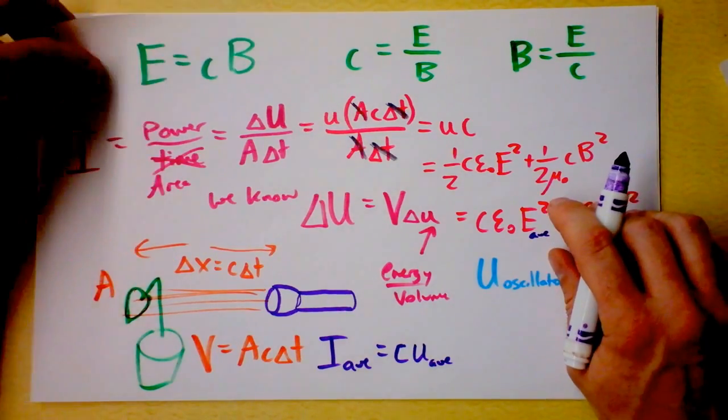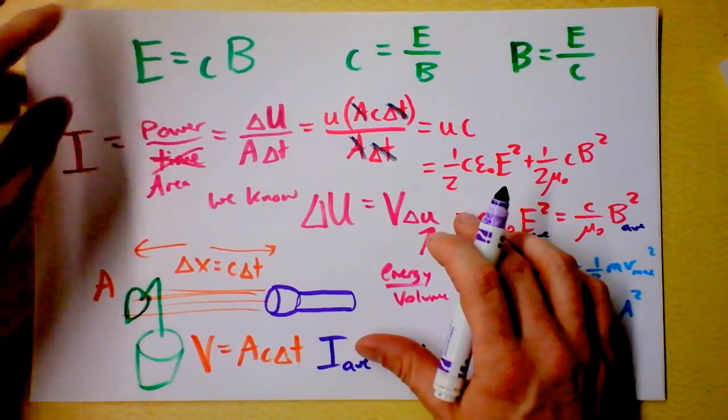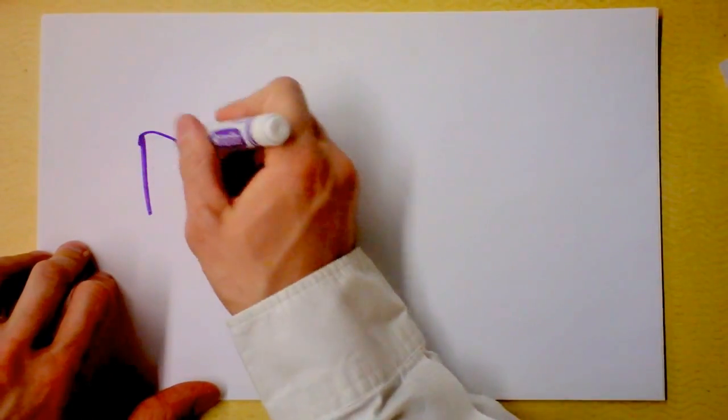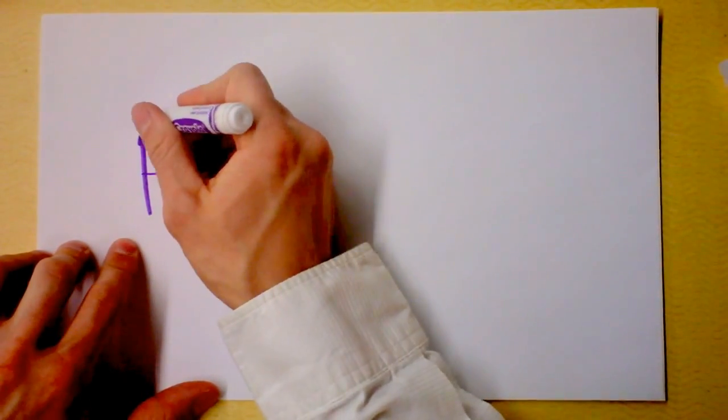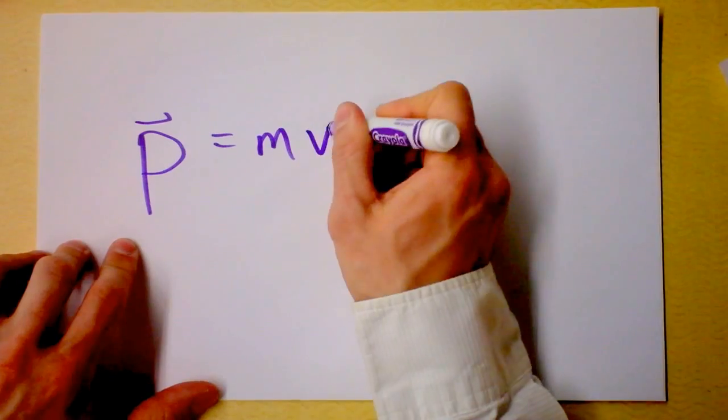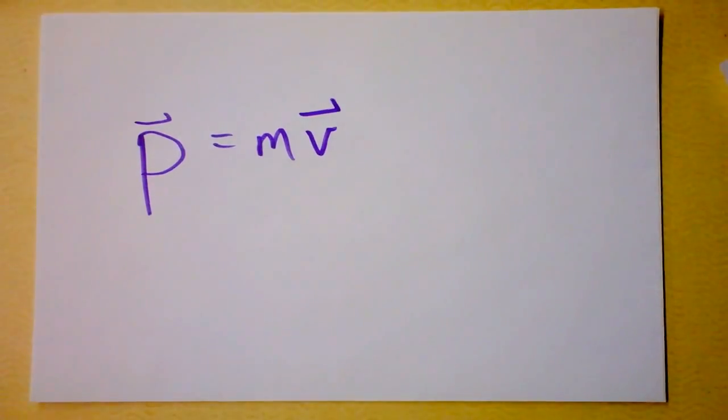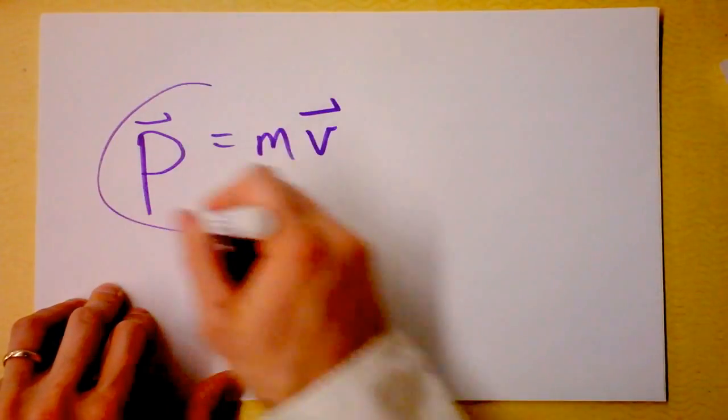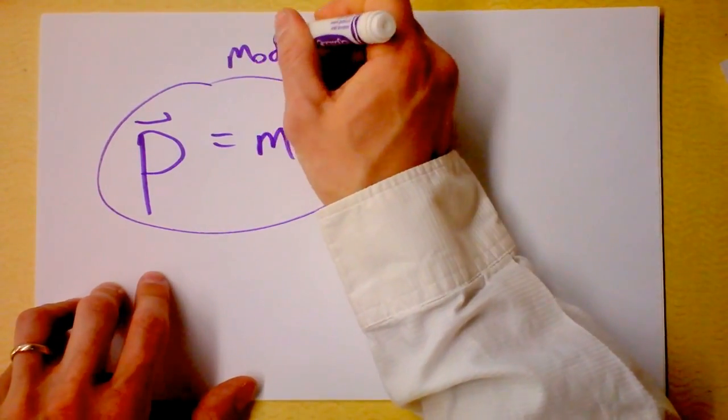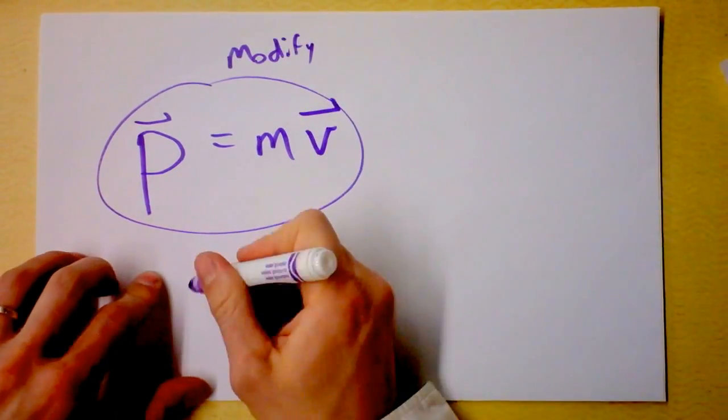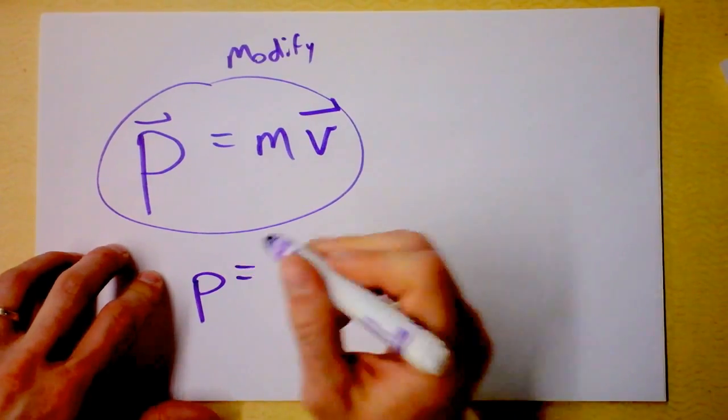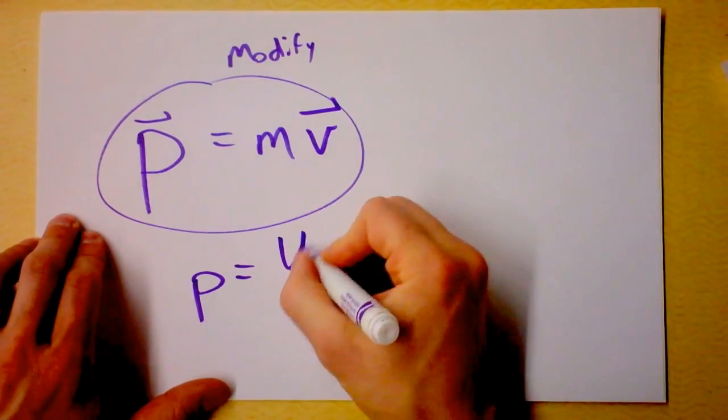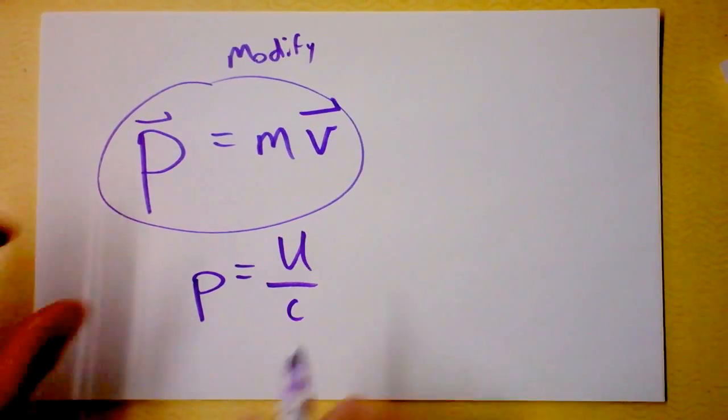The other beautiful thing about light, not only does it carry energy with it, it's also got momentum. When I first learned about momentum, they told me that P is m times v. So I know you're pissed right now because light doesn't have mass. Sorry. Light still carries momentum. So we're going to modify this sucker. In particular, I'm just going to state that the momentum of light is its energy divided by the speed of light.